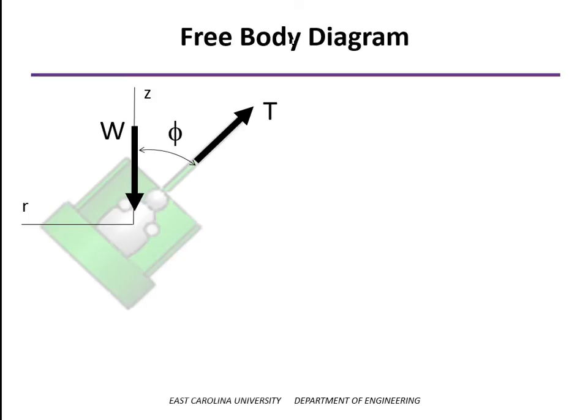So if we start out by taking the sum of the forces in the z direction, we have the weight acting downward. We have a component of the tension acting upwards. And that would be set equal to 0, because if the angle is being held constant, then there is no movement in the z direction. So there's no acceleration in the z direction.